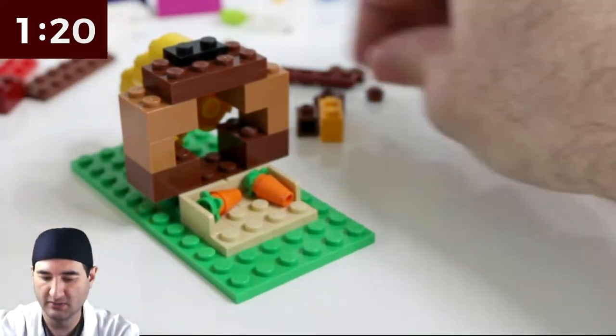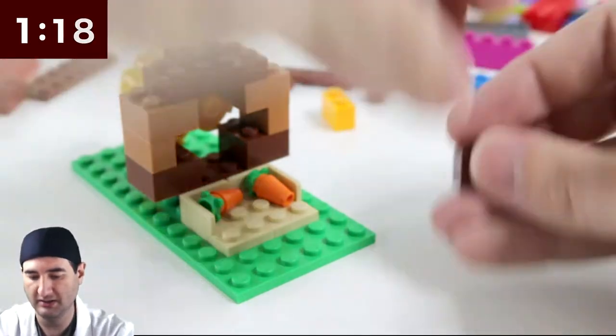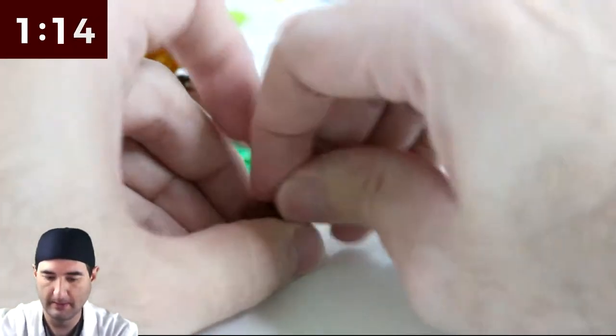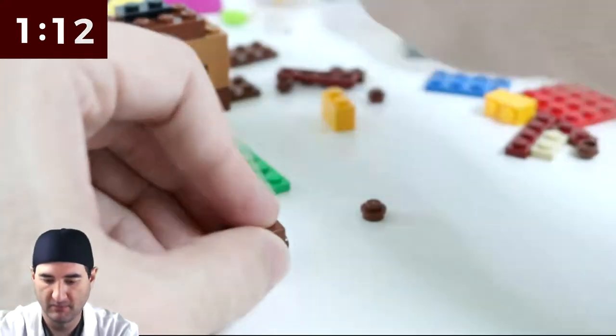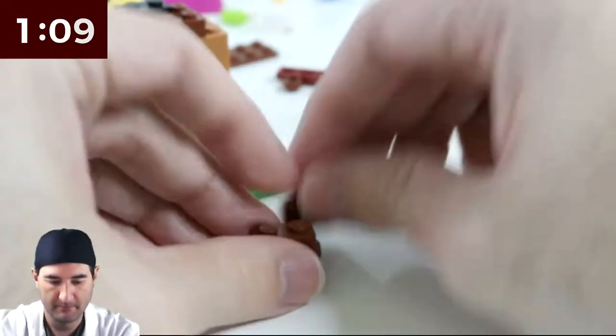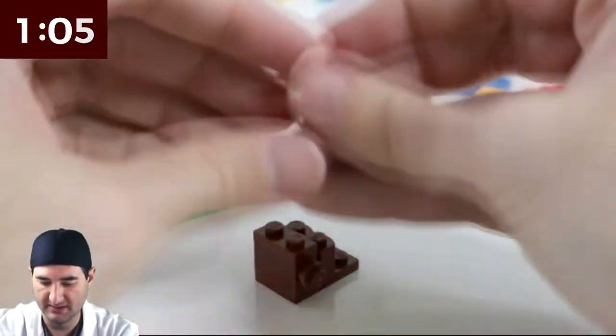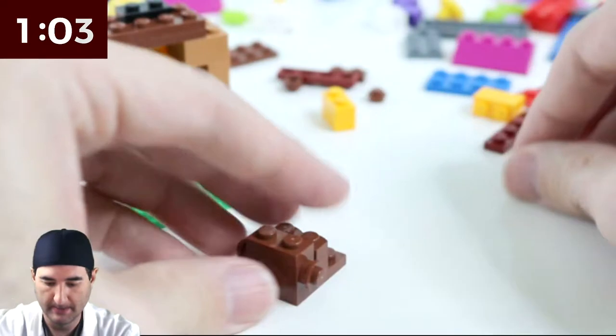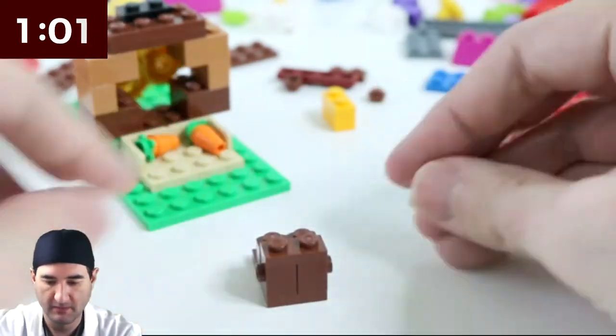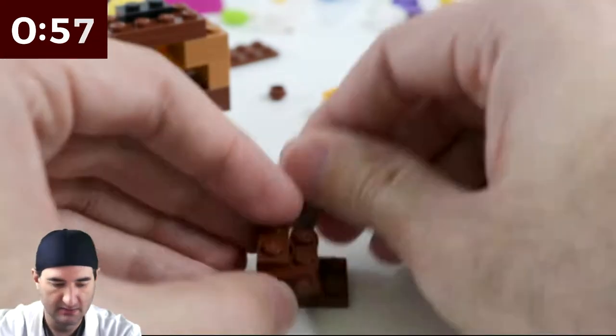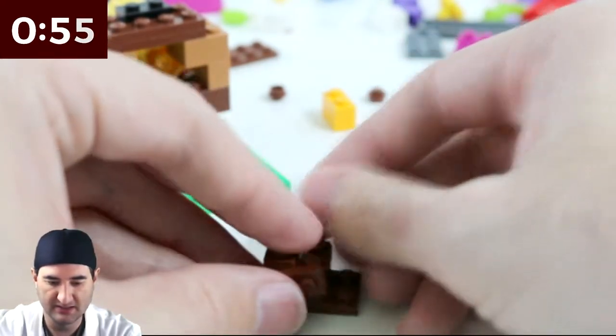So what else can we put out there? So maybe a turkey, right? Let's see if I can make a miniature turkey real quick. Nope. Yep. Like that. Like this. This is the arms of the turkey. Nope. Yep. Something like this. You see how this gets developed, right?